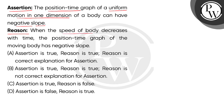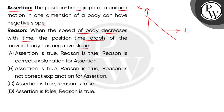And reason states that when the speed of a body decreases with time, the position-time graph of the moving body has negative slope. So children, first of all, we will represent the graph with x-axis along time and y-axis along the particle's position. Now we will show a straight line graph which has negative slope.